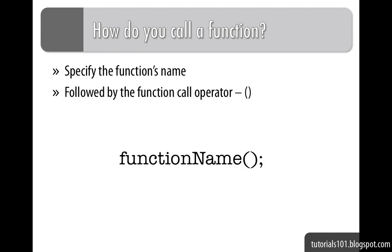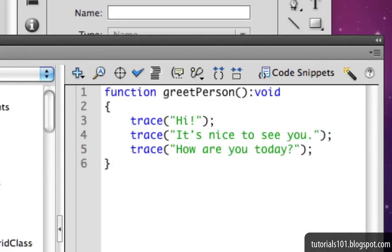Let's take a look at an example. Here, I've got a couple of trace statements enclosed within a function. Here's the function keyword. This is the function name, which is greetPerson.